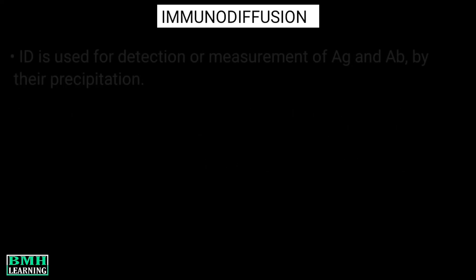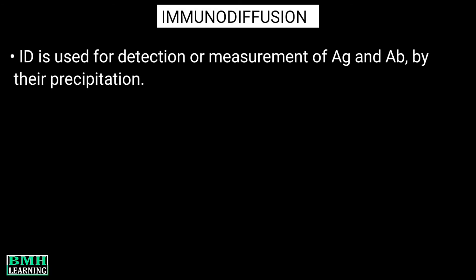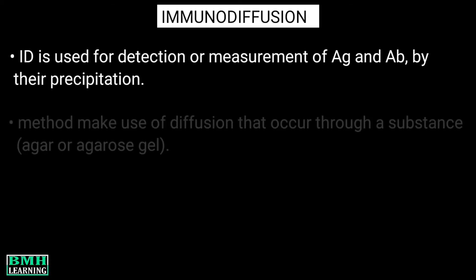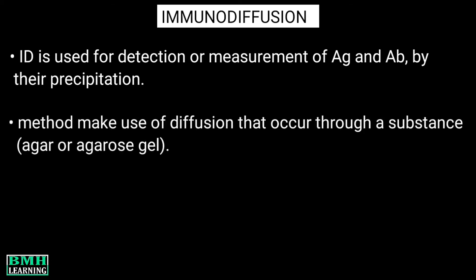Hello friends, welcome to BMH Learning. In this video, I'm going to talk about double immunodiffusion. Immunodiffusion is a technique which is used for the detection or measurement of antigens and antibodies by their precipitation. The method makes use of diffusion that occurs through a substance, usually agar or agarose. Simply, it can be said the method denotes precipitation in general.